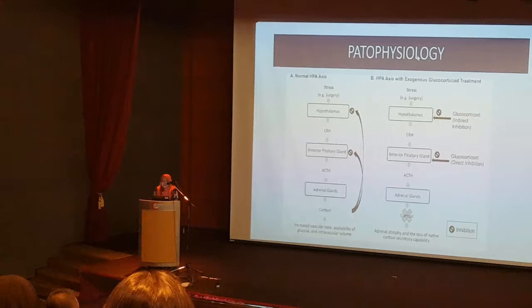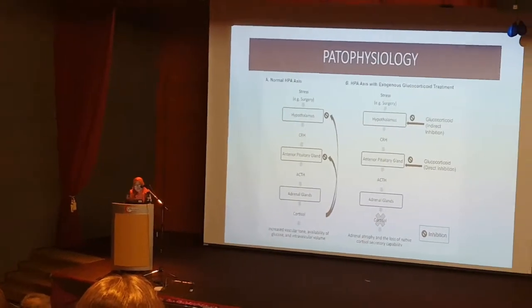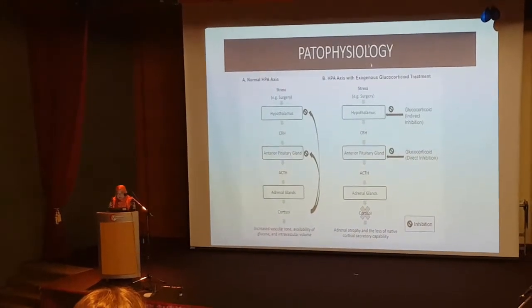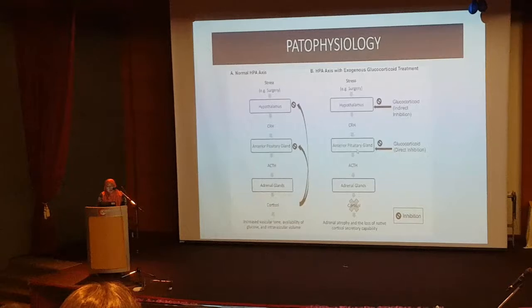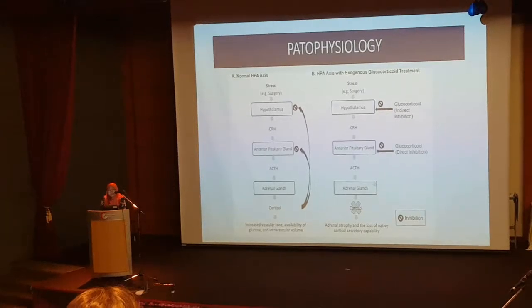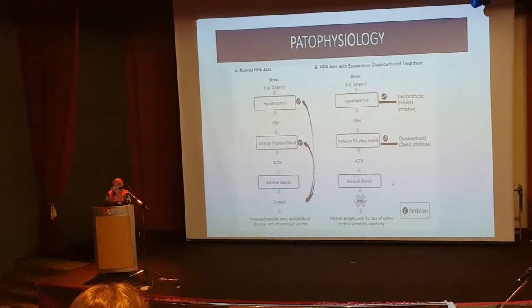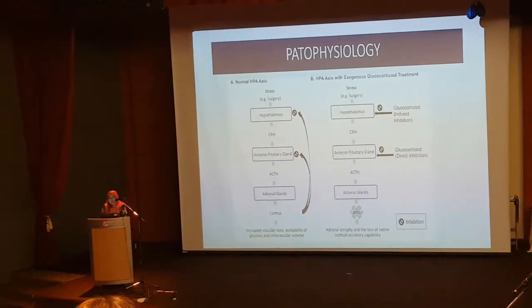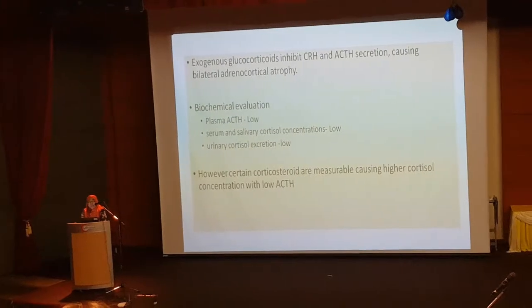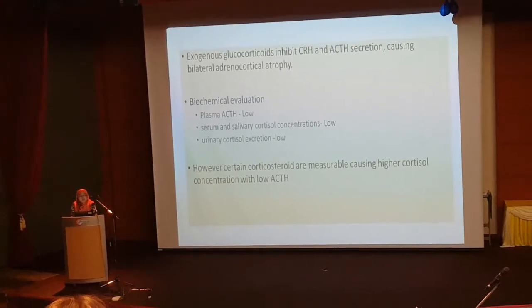However, in cases of exogenous glucocorticoid treatment — whether from herbal remedies or medications — it will suppress the anterior pituitary gland, reducing ACTH production. Hence, the adrenal gland does not produce enough cortisol. You must understand that exogenous Cushing's suppresses endogenous cortisol production, and this is the tricky part when we do biochemical evaluation of the patient with Cushing's.